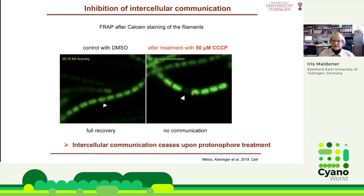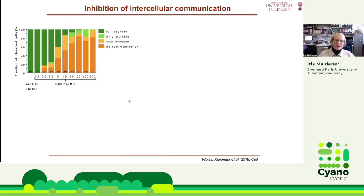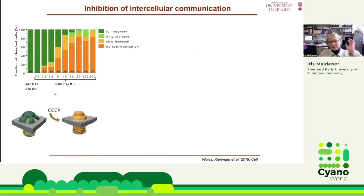It looks like the septal junctions completely shut down or close, and they don't allow any entrance of the dye from neighboring cells when we use the stress compound CCCP. When we increased the concentration of CCCP, we could see an increase of no-communication cells, shown here in dark orange, while the green bar shows full recovery after bleaching. Gregor then performed cryo-electron tomography after incubating the filaments with CCCP, and indeed he could recognize that they really make a structural change.